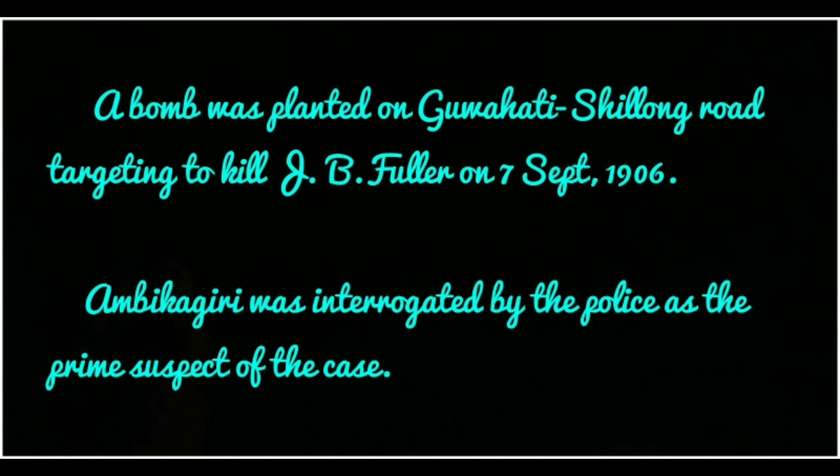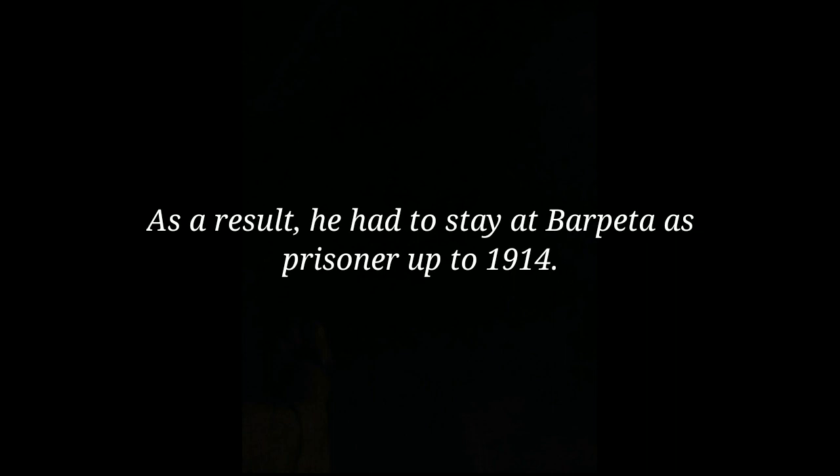A bomb was planted on Guwahati–Shillong Road targeting to kill J.B. Fuller, and Ambikagiri was interrogated by the police as the prime suspect of the case. As a result, he had to stay at Barpeta as a prisoner up to 1914.